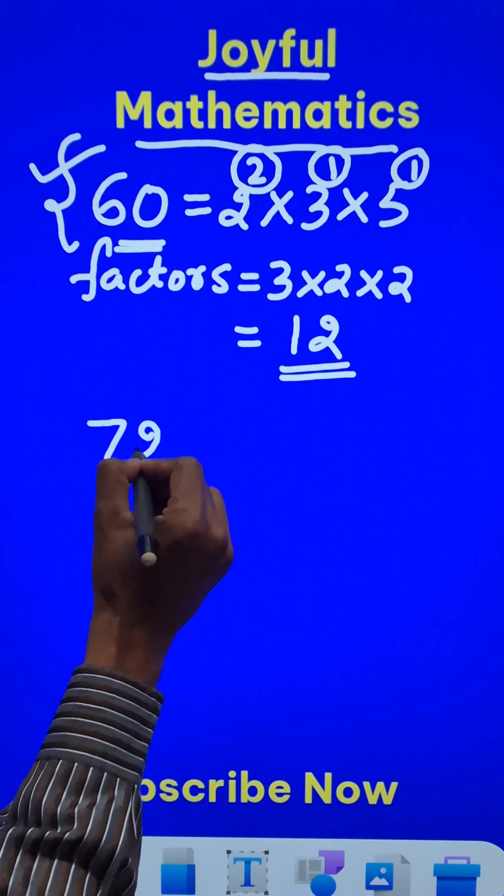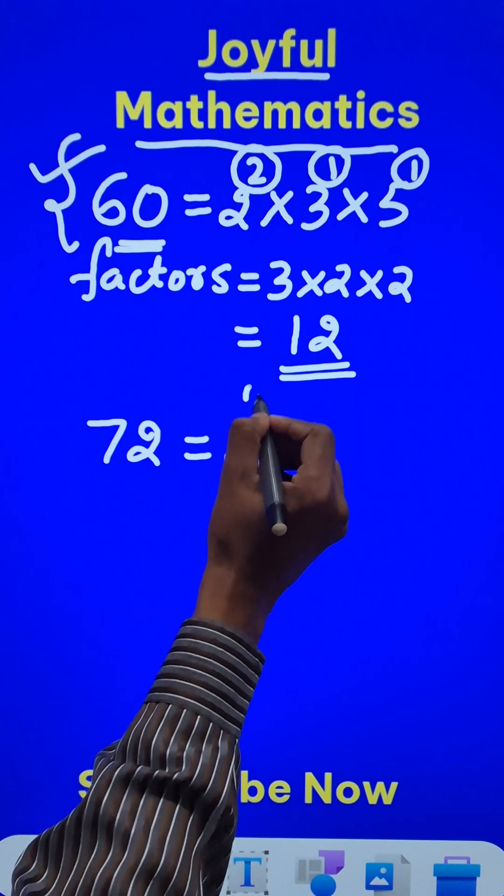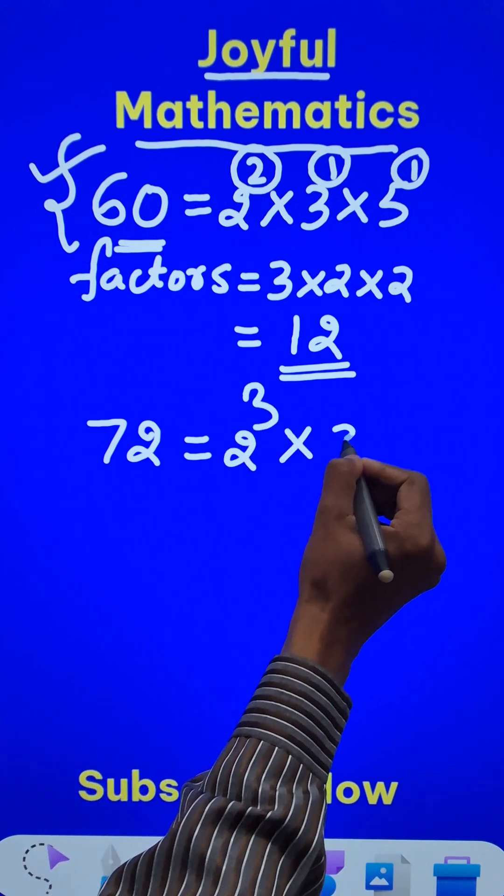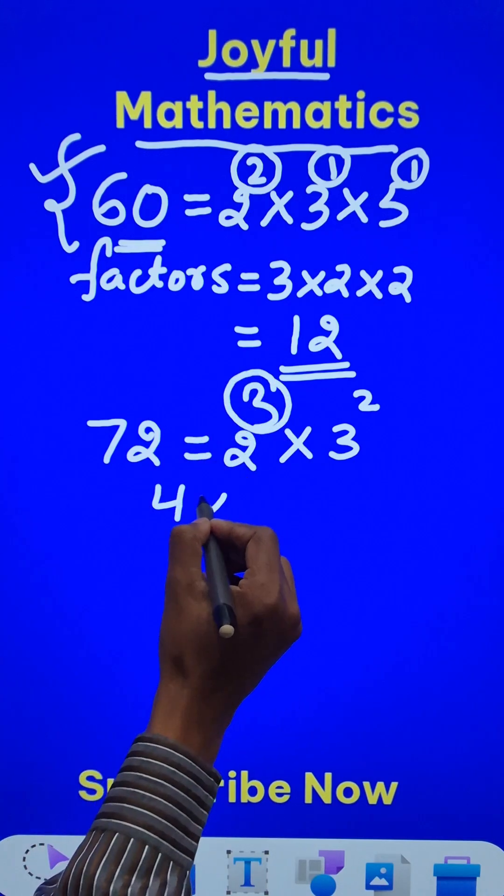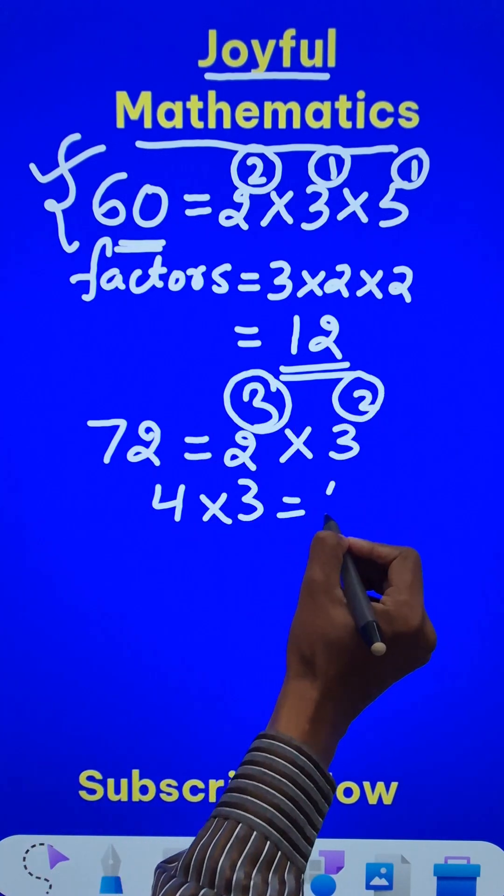Like the number 72 which is 2 raised to power 3, that is 8, and 3 raised to power 2, that is 8 times 9 equals 72. So if you see 3 plus 1 is 4 times 2 plus 1 is 3. So again 12 factors.